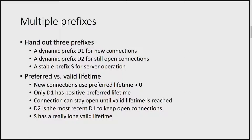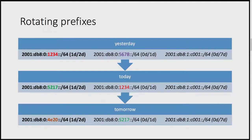What we are doing in response to this problem is we hand out multiple prefixes. We have one prefix which is currently used for new connections — it has a preferred lifetime greater than zero. In order to keep old TCP sessions alive, we also hand out the prefix that was previously used for new connections. And importantly, we hand out a third prefix which is a static prefix with a preferred lifetime of zero, so it will not be used for new connections, but has a very long valid lifetime.